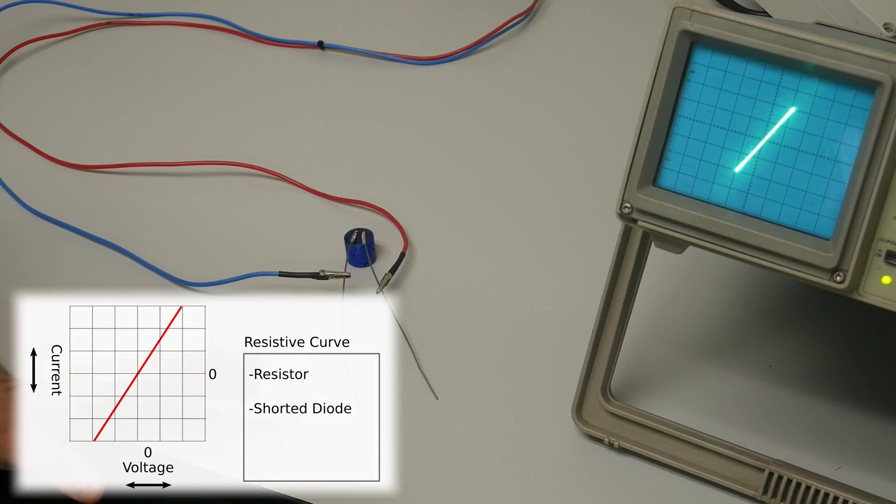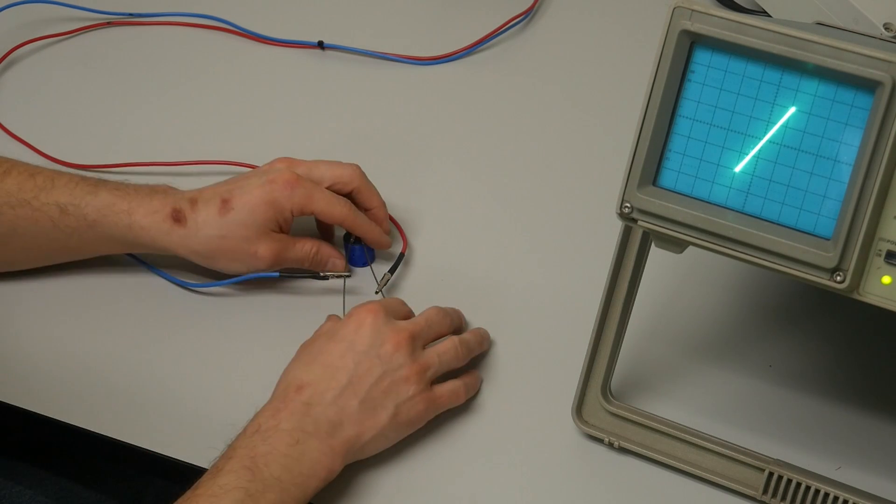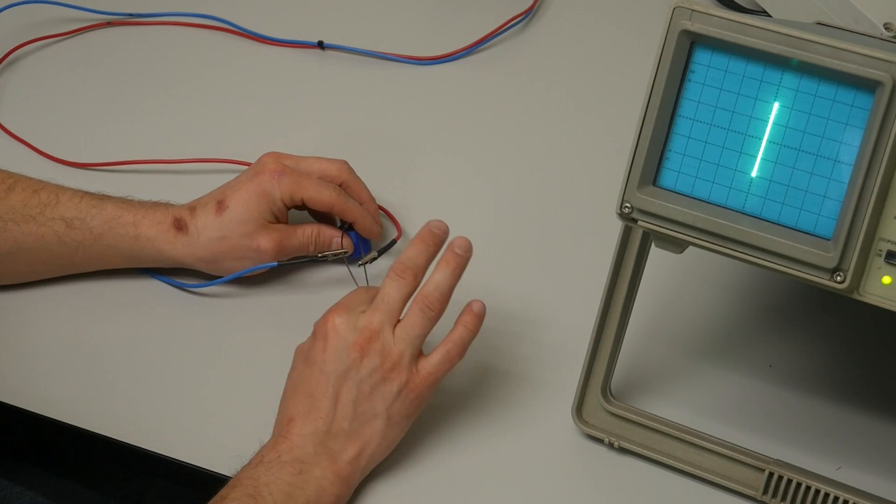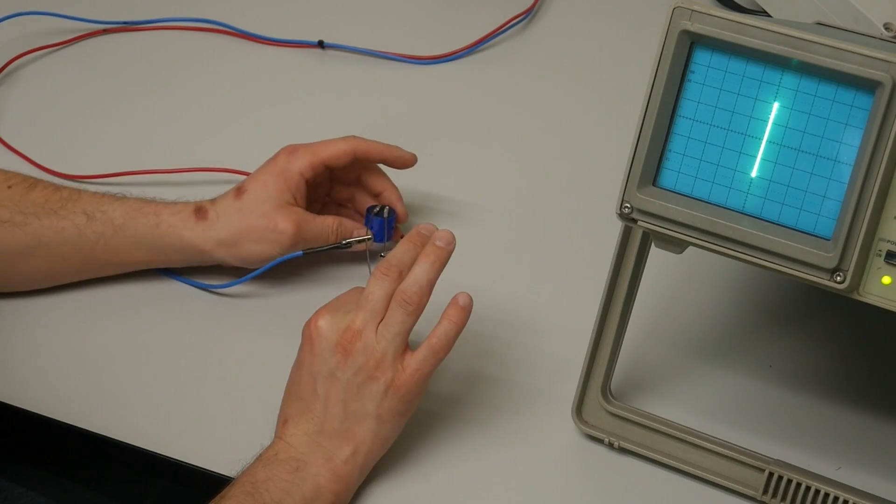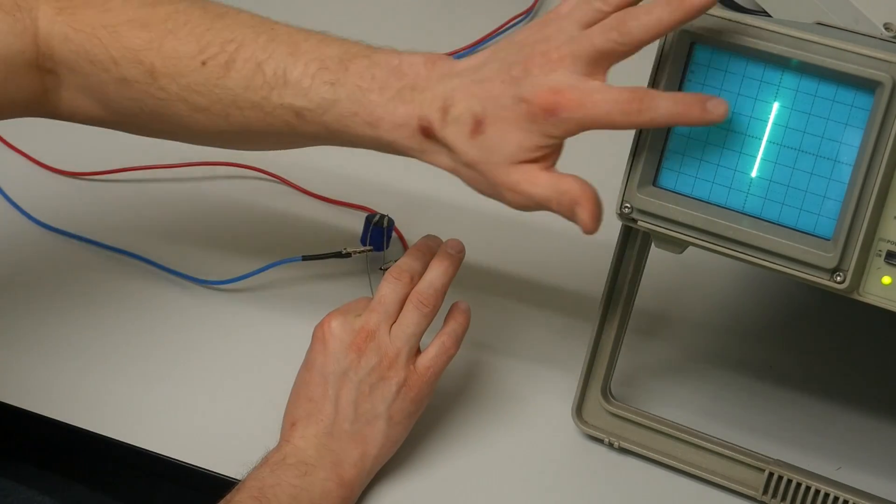Now don't confuse this with the short I showed you earlier. This short right here, I'm touching the leads together, is a zero-ohm short which is very, very steep, just like how an infinite-ohm open is very, very horizontal.